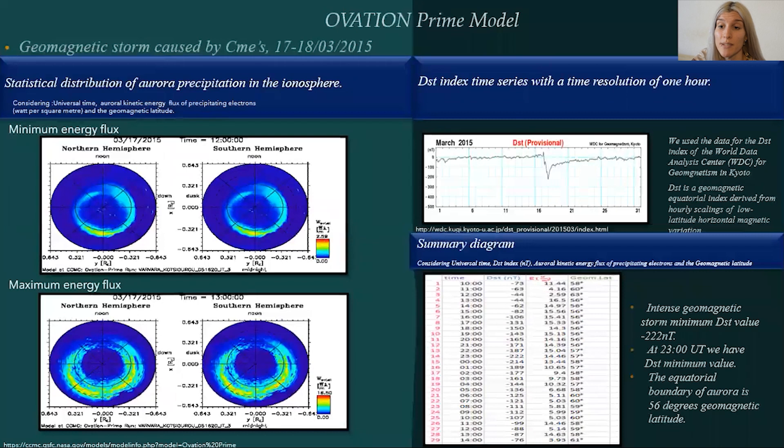In our last case, we have a serious drop in our DST index at minus 222 nanotesla at 2300 UT. We can see the enhancement of the energy flux maximum to 16.5 Watt per square meter at 1300 UT, and the equatorial boundary of aurora is 56 degrees geomagnetic latitude. So we have a more intense geomagnetic storm than the previous ones.